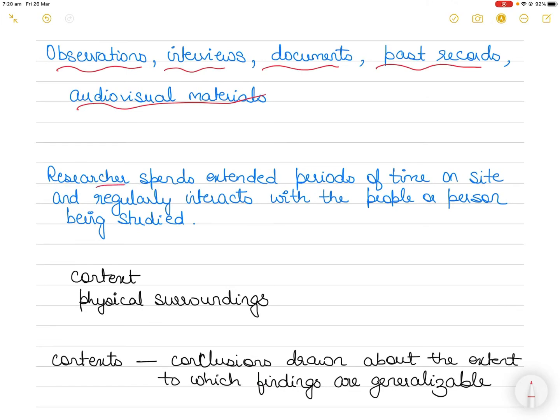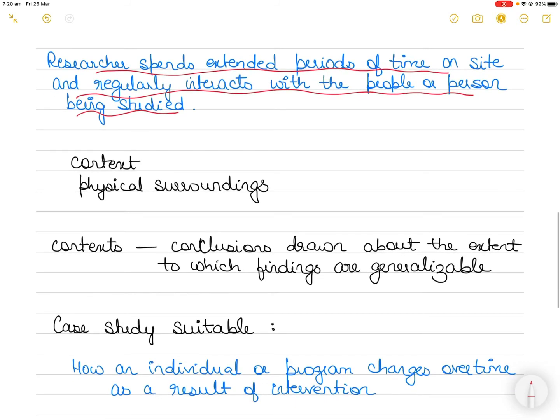In many case studies, the researcher spends an extended period of time on site and regularly interacts with the people or persons being studied. The researcher also records details about the context surrounding the case or cases of focus, including information about the physical environment and any historical, economic, and social factors that have bearing on the situation.